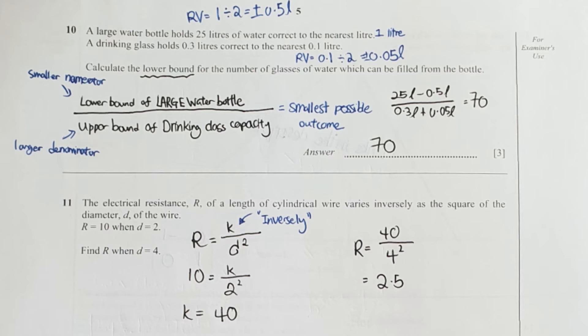So for you to get to the lower bound, your numerator must be smaller and your denominator must be bigger. Then when you run the calculation, you can get the smallest possible outcome. So your final result will actually be 70 bottles.